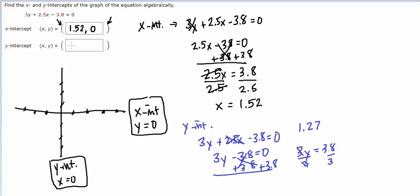So in this case, the x is now 0 because it's a y-intercept, and y is 1.27. And that is how you find intercepts algebraically.